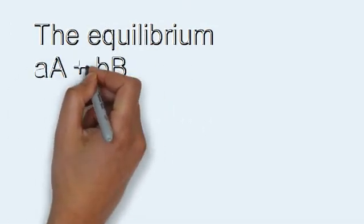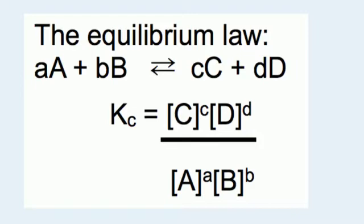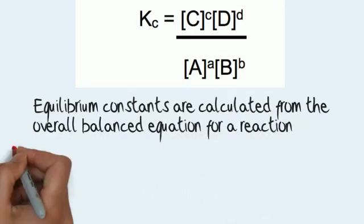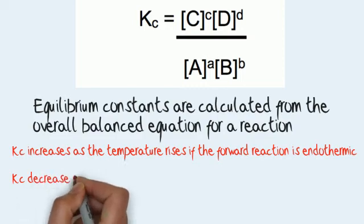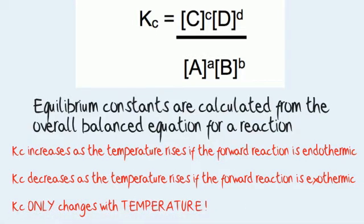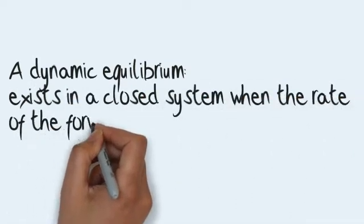The equilibrium law: where a moles of A plus b moles of B is in equilibrium with c moles of C and d moles of D, for Kc the equilibrium constant equals the concentration of C raised to the power of c, times the concentration of D raised to the power of d, divided by the concentration of A raised to the power of a, times the concentration of B raised to the power of b — i.e., products divided by reactants. Equilibrium constants are calculated from the overall balanced equation for a reaction. Kc increases as the temperature rises if the forward reaction is endothermic, and Kc decreases as the temperature rises if the forward reaction is exothermic. Remember, Kc only changes with temperature — it's an equilibrium constant.